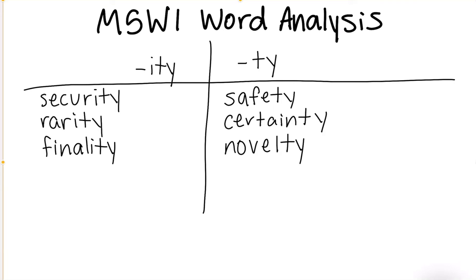Hi everybody, my name is Ms. Heaney, and today we are doing our Module 5 Week 1 Word Analysis Skill. Today we are talking about two suffixes: I-T-Y and T-Y. Remember that suffixes are added to the end of the base word to change the meaning. Both of these suffixes mean the state of being something.